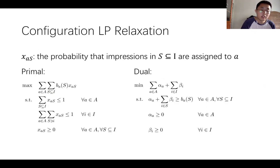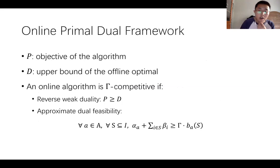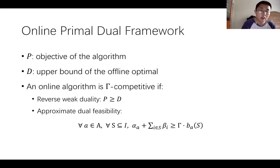The next question is how to utilize the idea of OCS in the panorama view for AdWords. Our algorithm builds on the strengths of a configuration linear program as a benchmark, where we use a decision variable X_eS to represent the probability that any subset S of impressions are assigned to advertiser A. The change of the decision variables then leads to the change of the dual constraints. We proceed with the online primal-dual framework on the configuration LP to design and analyze the algorithm.